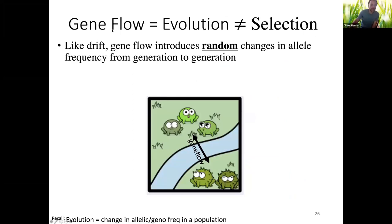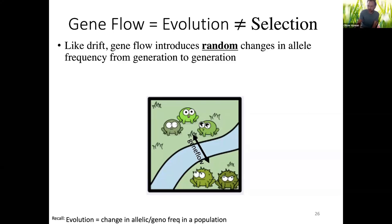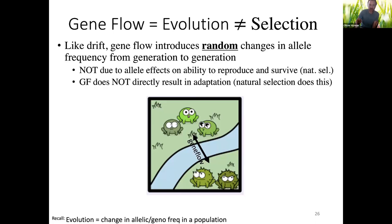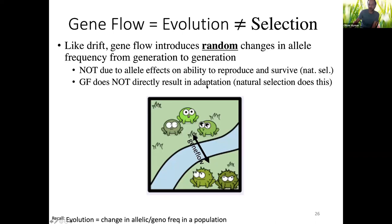Gene flow is a type of evolution in the sense that it introduces random changes in allele frequencies from generation to generation. If spiky frogs introduce the spike frog allele into a population, that will potentially alter the allele frequency — so by definition, that population is evolving. But it's random — it has nothing to do with any selective advantage of those alleles. Gene flow is not an example of adaptation; it's not due to allele effects on the ability to reproduce and survive, and it does not directly result in adaptation.